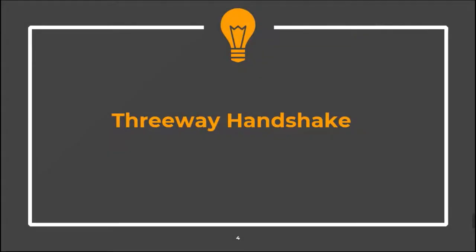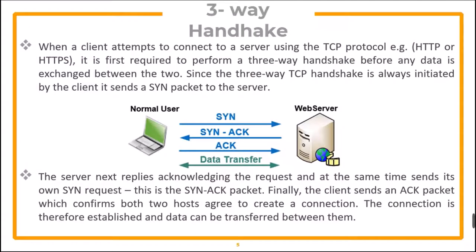Let's first of all see how the three-way handshake works. When a client attempts to connect to a server using TCP protocol, it is first required to perform a three-way handshake before any data is exchanged between the two. Since the three-way TCP handshake is always initiated by the client, it sends a SYN packet to the server. The server next replies acknowledging the request and at the same time sends its own SYN request — this is the SYN-ACK packet. Finally, the client sends an ACK packet which confirms both hosts agree to create a connection. The connection is therefore established and data can be transferred between them.